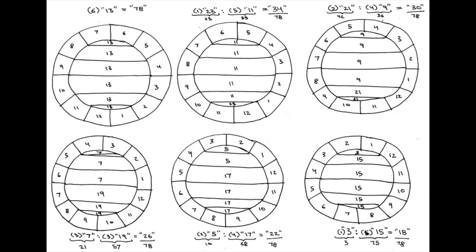Thus, the names or titles for the six arrays are 18, 22, 26, 30, 34, and 78.